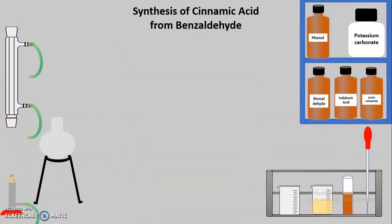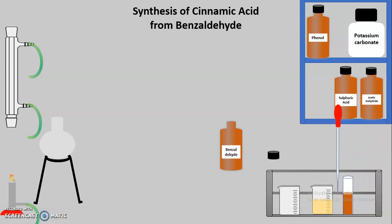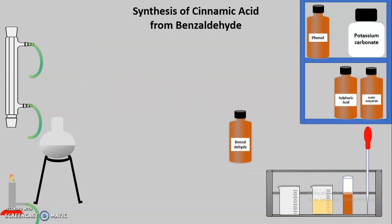Now I will introduce you to the virtual lab where we are going to perform the synthesis of cinnamic acid from benzaldehyde. Here you can see we have placed the various chemicals required: benzaldehyde, acetic anhydride, potassium carbonate, sodium hydroxide, and water. We also have a reflux condenser, round bottom flask, burner, and pipette for taking the chemicals. The first step is to take 5 ml of benzaldehyde — we take the bottle, remove the cap, use the pipette to measure 5 ml, and transfer it into the round bottom flask.